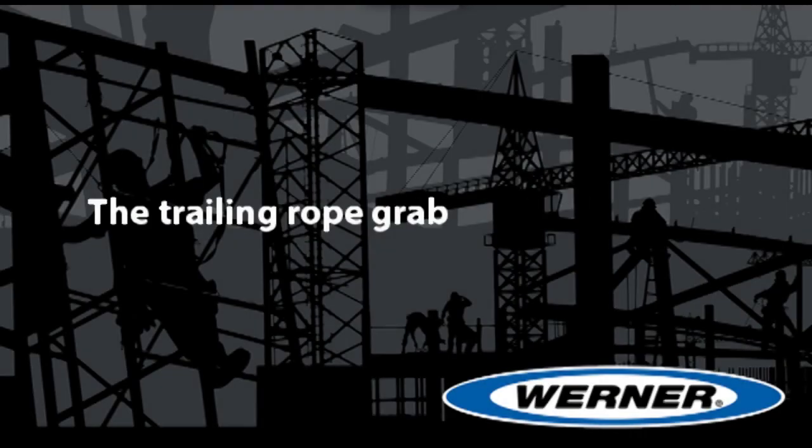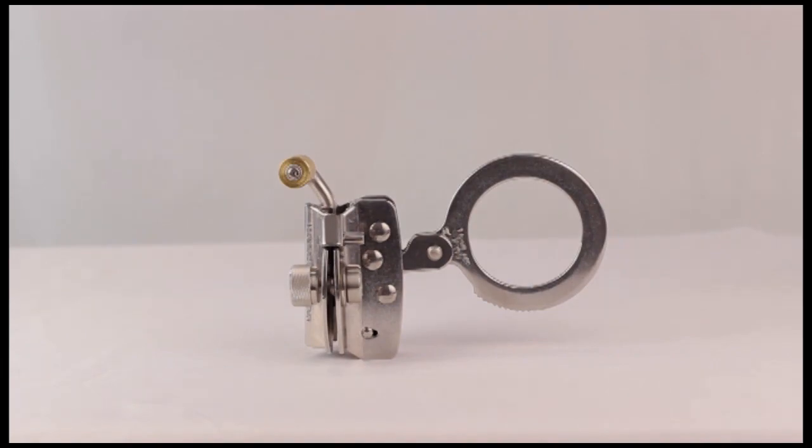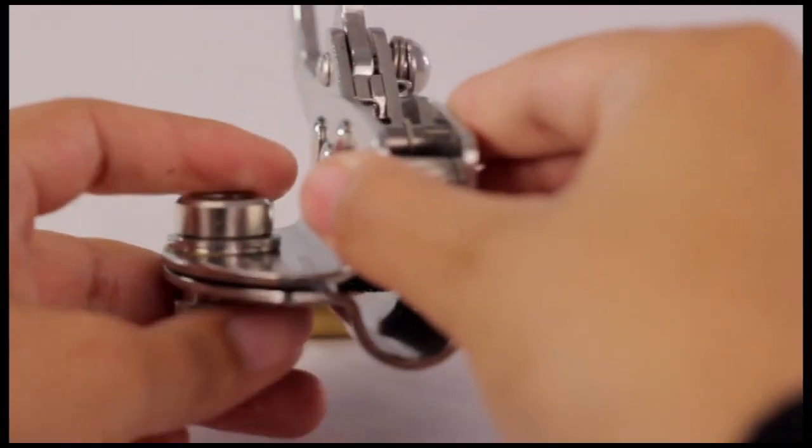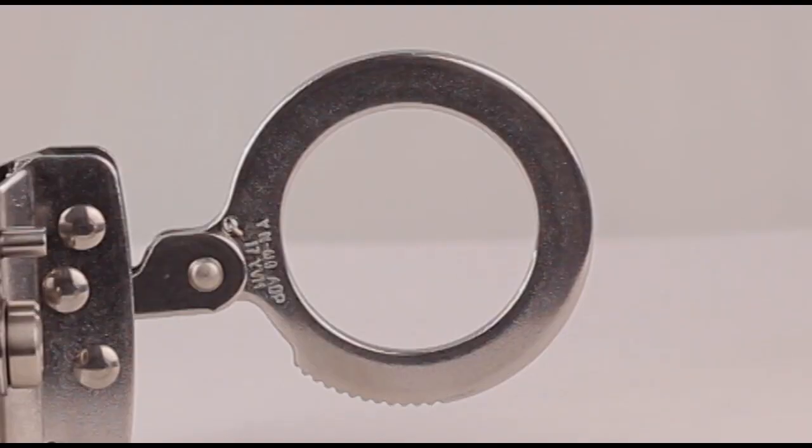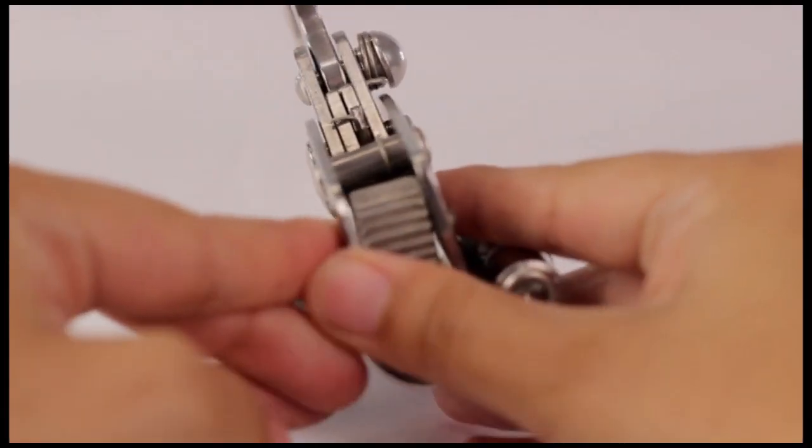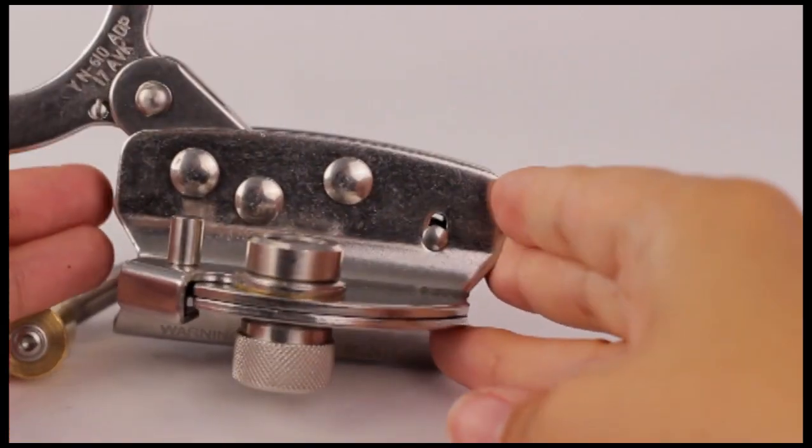The Trailing Rope Grab. Be sure all the parts of the rope grab are present, including but not limited to the cams and springs, the rope channel and ring. If any parts are missing, do not use the rope grab. Tag and remove it from service.